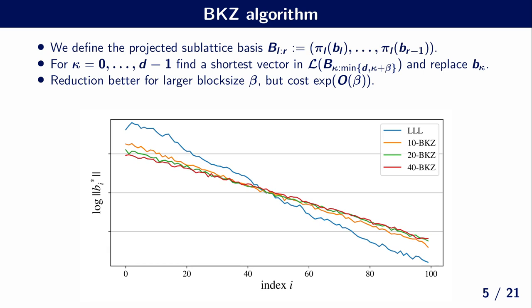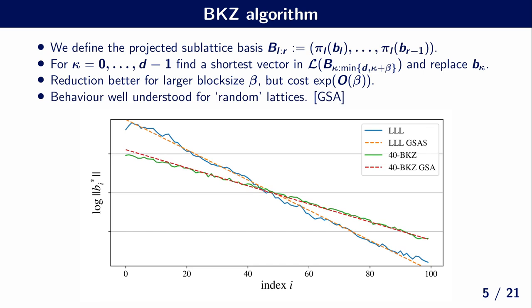For the rest of the presentation, we will account for the complexity of solving the NTRU problem in terms of this block size beta. The behavior of BKZ is pretty well understood for random lattices: the Gram-Schmidt norms almost form a straight line whose angle can be predicted by the so-called Geometric Series Assumption (GSA).